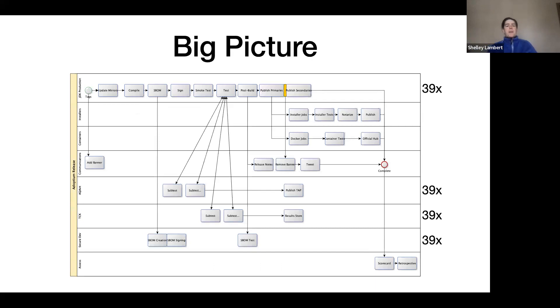So the big picture here, and people have seen this before, I created this giant picture which now is starting to look rather complex of the Adoptium release process. You'll note that we have swim lanes for different parts of that process. There's a JDK production swim lane at the top, there's activities relating to publishing installers and containers.